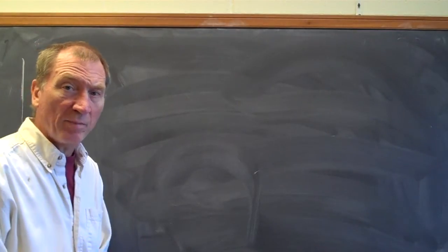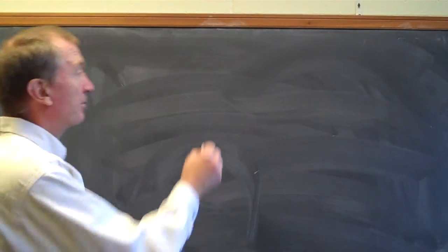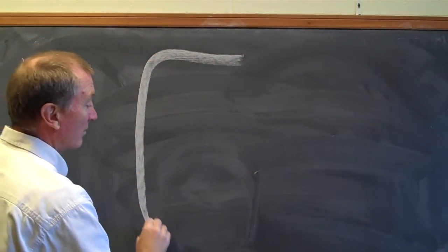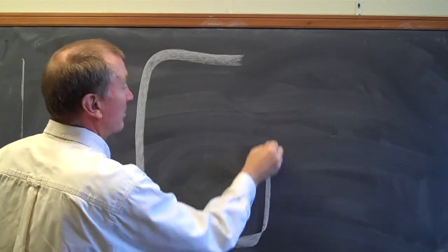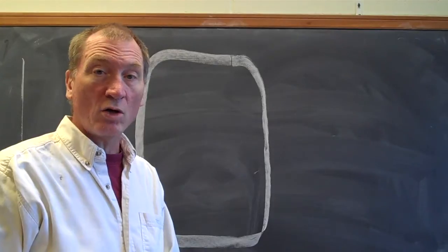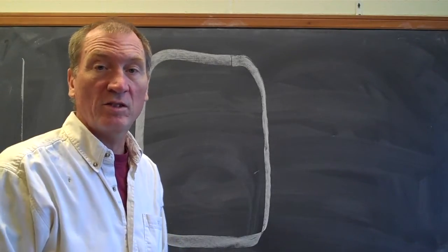All right, so we're going to start from the outside of the plant cell and move in. On the outside of the plant cell is a thick wall called, logically enough, the cell wall.